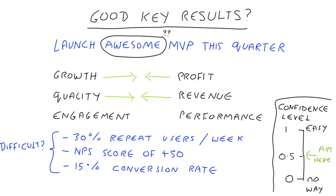A confidence level of zero would mean it's never going to happen, and a confidence level of one would mean it's too easy. You're really looking for a sweet spot where you're pushing yourself and your team to do bigger things and where you have a 50-50 chance of failing. So the idea is to aim high — if the key results make you feel uncomfortable, then you're probably setting them correctly. The next lesson will be a practical lesson to get you warmed up where we can create our first OKR. See you soon.